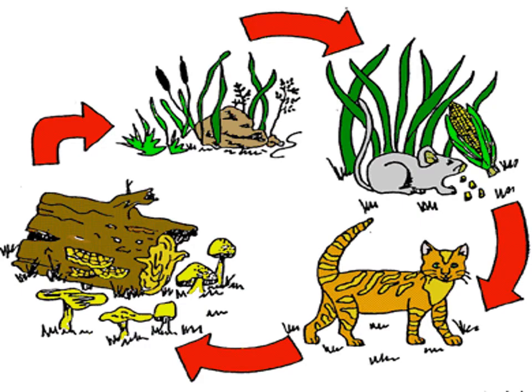Here is a simple food chain. We begin first with the plants — they are the producers. Then we have our consumers, which are, in this case, the rat and the cat. Our decomposer here is the mushroom.